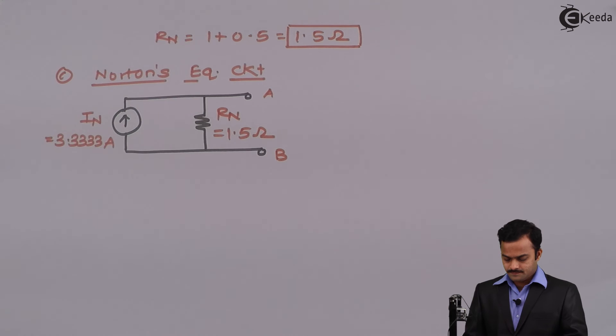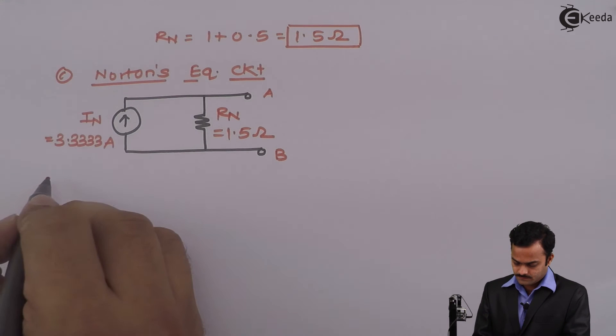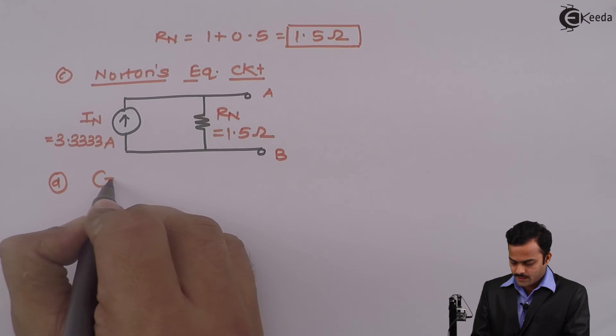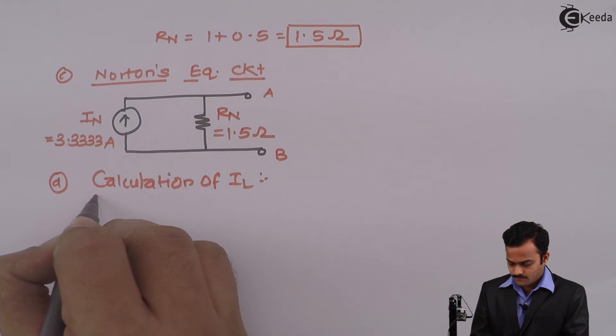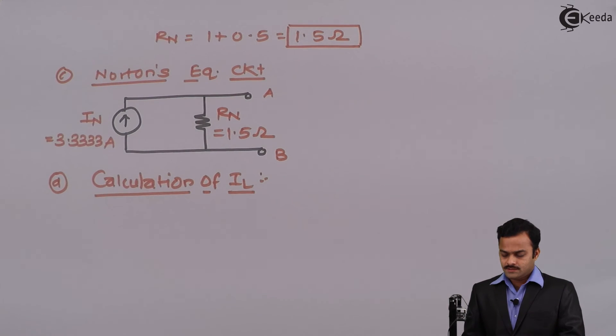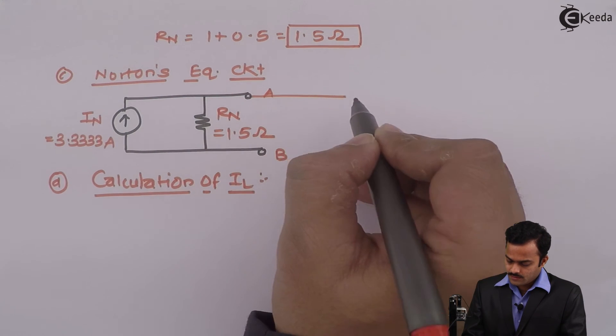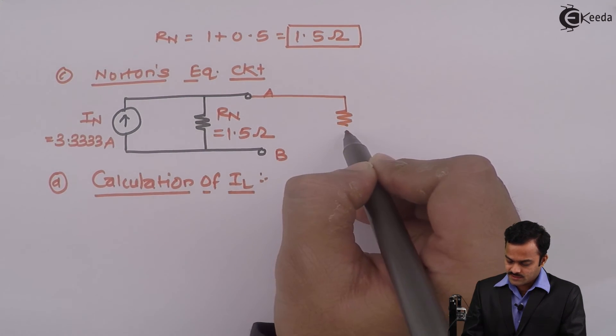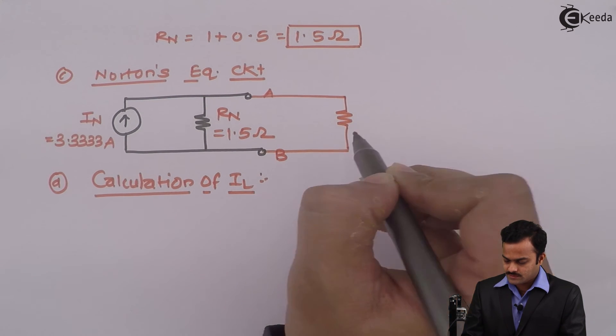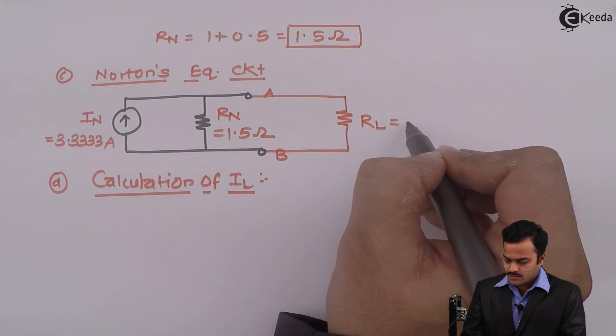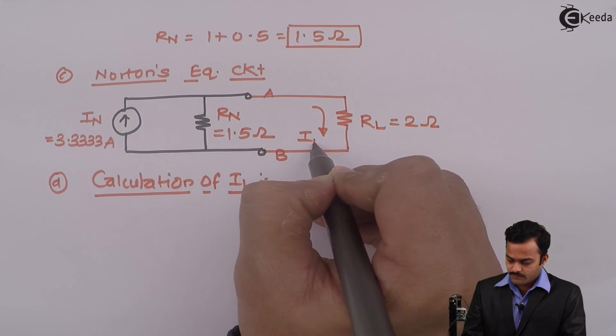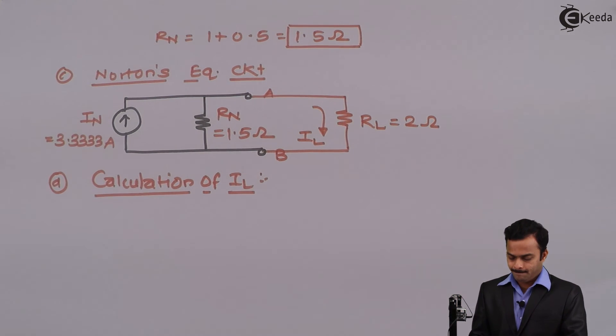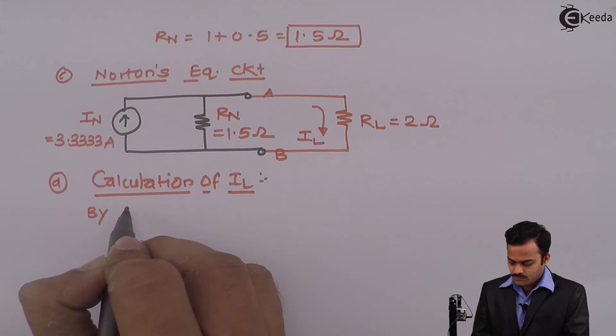Now the last step is calculation of IL. For this we need to reconnect whatever the load resistance is given. So load resistance given over here is 2 ohm, and through that resistance we have to find out IL, so we have to use current divider rule.